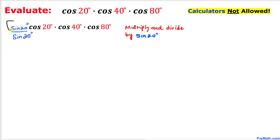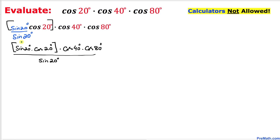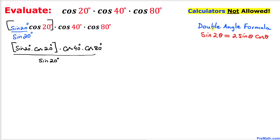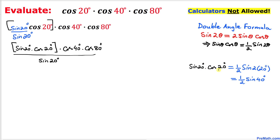Let's combine these two quantities: sine of 20 degrees times cosine of 20 degrees. We are going to use the double angle formula: sine of 2θ equals 2 times sine θ cosine θ. Dividing both sides by 2, we get sine θ times cosine θ equals one-half times sine of 2θ. So sine of 20 degrees times cosine of 20 degrees can be written as one-half times sine of 2 × 20 degrees, which is sine of 40 degrees divided by 2.